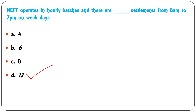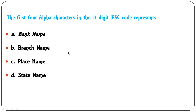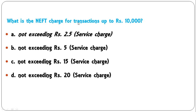The first four alpha characters in the 11-digit IFSC code represent: bank name, branch name, place name, or state name? The first four characters denote the bank name — A is the correct answer. What is the NEFT charge for transactions up to ₹10,000? The options are: not exceeding ₹2.5 including service charge, not exceeding ₹5, not exceeding ₹15, or not exceeding ₹20. For up to ₹10,000, it should not exceed ₹2.50 plus service charges — A is the correct answer.